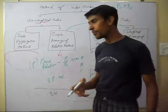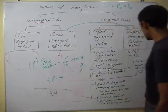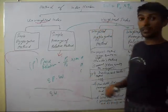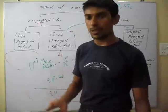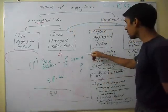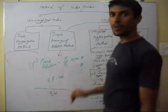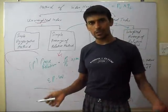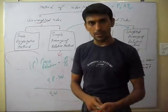These are the main formulas we have discussed. The most important is the Fisher method, which is the ideal index number because it is the geometric mean of Laspeyres and Paasche, and is mostly used in the industry. Thank you very much.